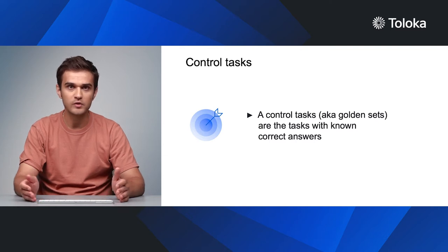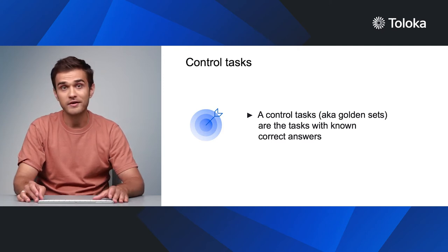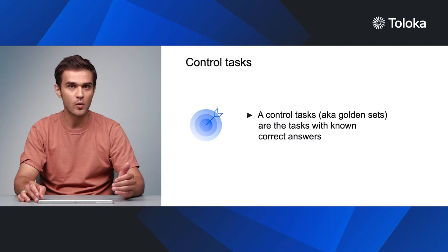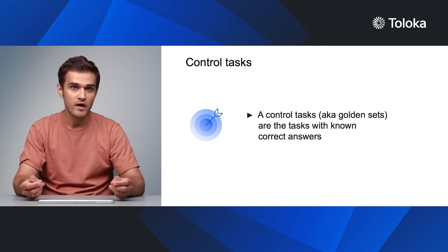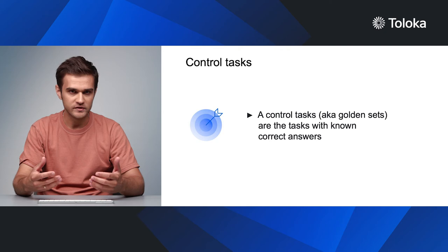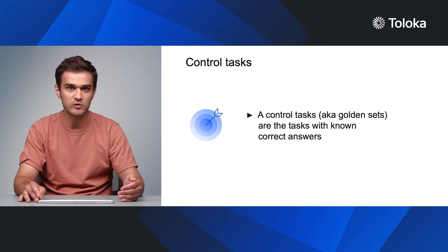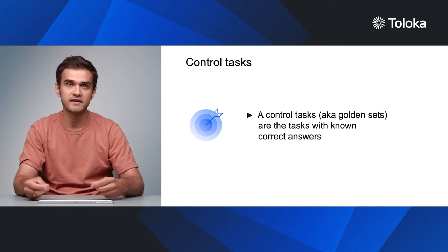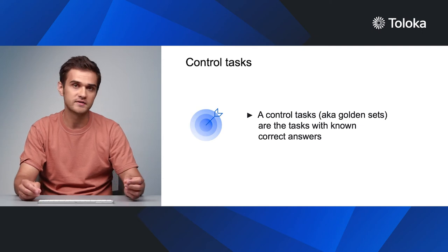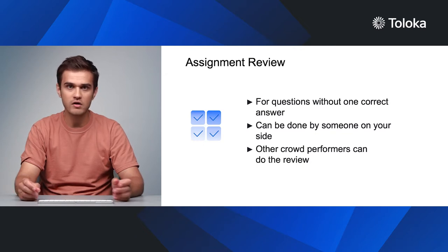Control tasks, also known as golden sets, are tasks with known correct answers. The control task is presented to the performer as a normal task, without letting them know a special check is involved. By adding control tasks to your project, you can work out the percentage of correct responses for the project and for individual performers. However, control tasks can only be used for questions that have a single correct answer — and not all crowd tasks are like this. Some require a creative approach or content processing and can have a variety of correct solutions.